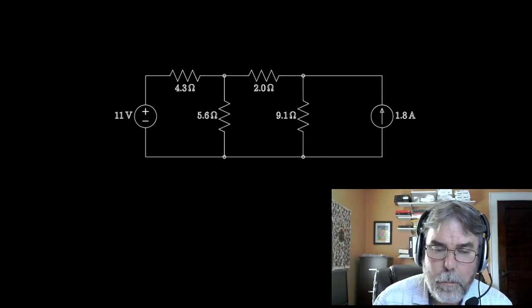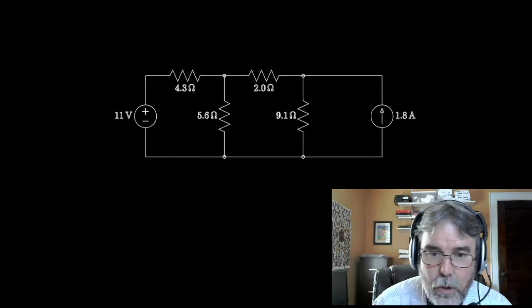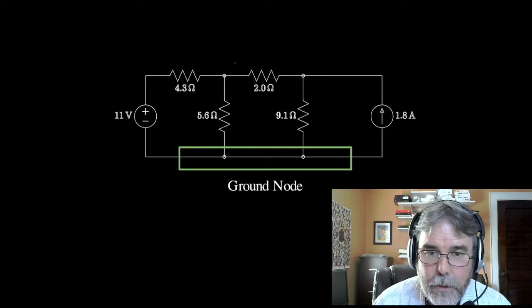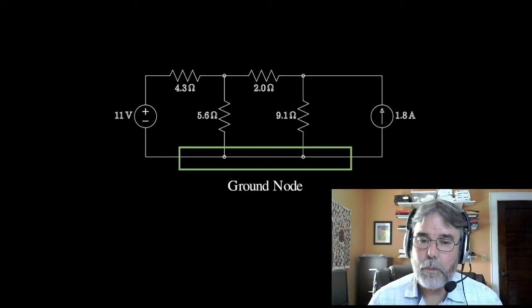So points in a circuit where multiple elements come together is called a node. The first node I want to talk about is this node at the bottom of the circuit. I'm going to call that guy the ground node. The ground node is the reference node.